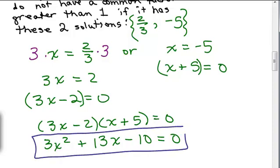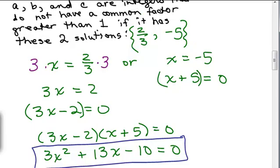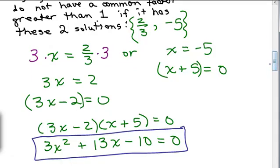Now what you would want to make sure of is that when you plugged in 2 thirds into that equation, here we go. When you plugged 2 thirds in for x, you do want to make sure that it really is a solution, so you would have to get 0 on both sides. I will leave that to you, and then you would also want to make sure that negative 5 is a solution. I think negative 5 is easy to check. Let's do that.